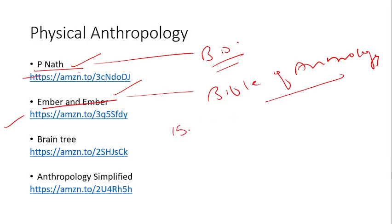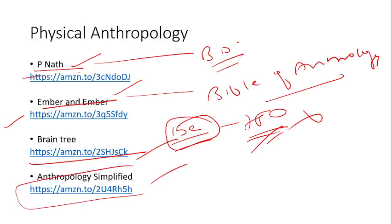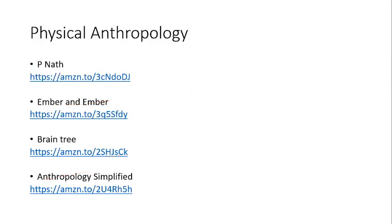Take the black color 15th edition of Ember and Ember — that is the 15th edition, priced at 750 rupees. Don't keep the PDF; buy the book. Brain Tree आप रख सकते हो — बहुत सारे places में काम आता है, because some things you don't find in notes or books, तो वो आप Brain Tree से direct उठा लेना. Do buy Anthropology Simplified by Vhasmi sir — this is the best book for note-making. For physical anthropology it is very important; some chapters you can cover directly from it. So for physical anthropology: Peenath, Ember and Ember, Brain Tree, and Anthropology Simplified.